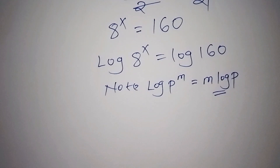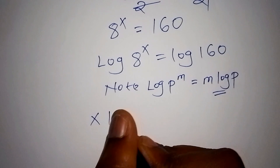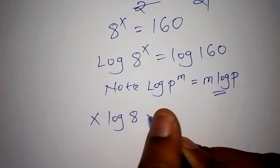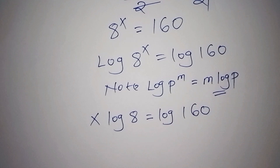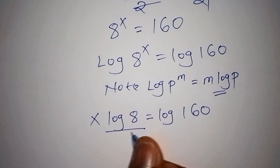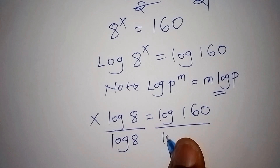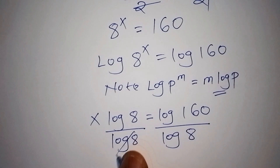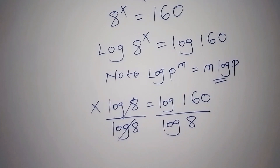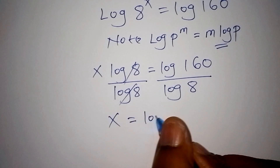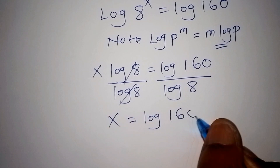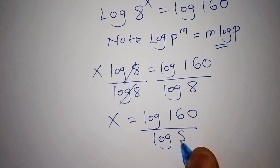We express log of 8 to the power of x in the form m·log(p), so we have x·log(8) equals log(160). To remain with x alone, we divide both sides by log(8), so that log(8) cancels, giving us x equals log(160) over log(8).